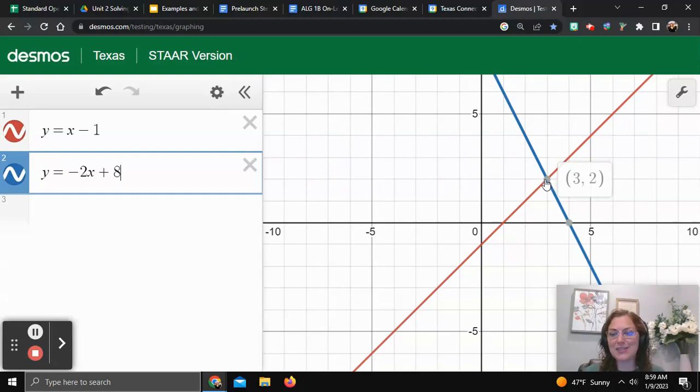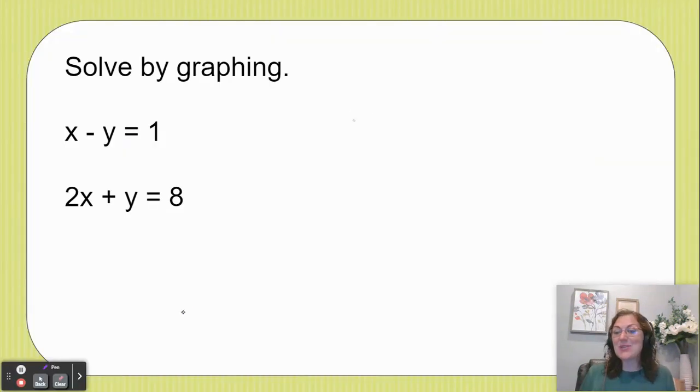So friends, once we've used that Desmos graphing calculator, wasn't it amazing that it did all of the graphing work for us? I get my solution from where those two lines intersect.